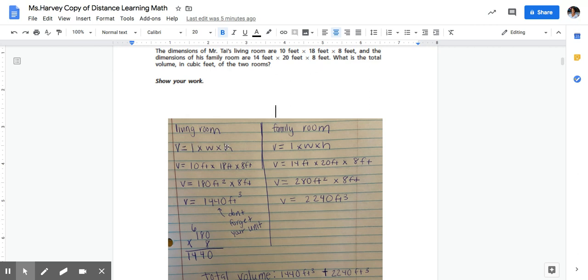So my work is set up. I have the living room and the family room and I did my work by writing out my volume formula: length times width times height. Then I plugged in the numbers that were given to me in my word problem.